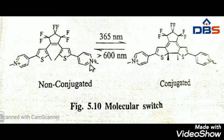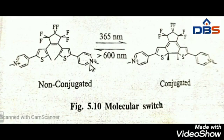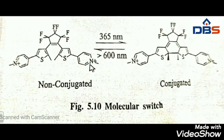Applications of supramolecular devices means these are molecules or assemblies that can perform functions such as linear or rotational movement. Switching and attachment — these devices exist at the boundary between supramolecular chemistry and nanotechnology. Supramolecular devices are classified into three types: switching devices, ionic devices, and electronic devices.